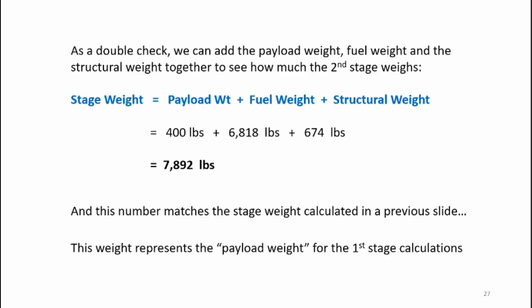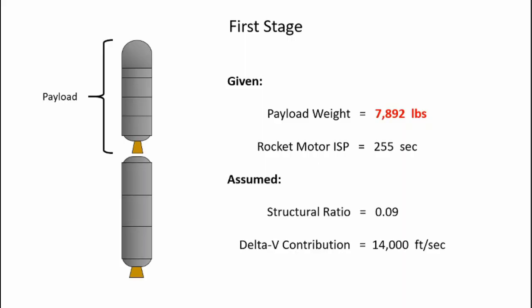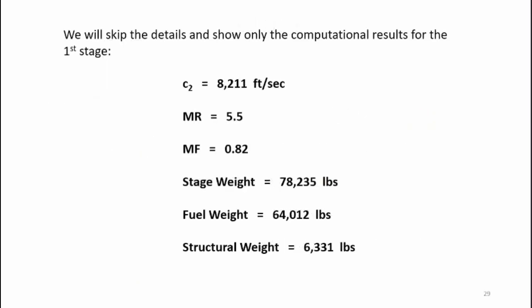This weight of 7,892 pounds represents the payload weight for the first stage calculations. Now we apply the same calculations to the booster stage. The payload weight is now everything above the first stage — 7,892 pounds. The rocket motor ISP is 255 seconds, structural ratio is 0.09, and the delta-V for the booster stage is 14,000 feet per second. Running through the same process: C2 is 8,211 feet per second, MR is 5.5, MF is 0.82, stage weight is 78,235 pounds, fuel weight is 64,000 pounds, and structural weight is just over 6,000 pounds. The total vehicle weight is 78,235 pounds.